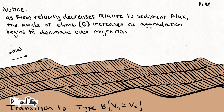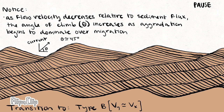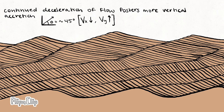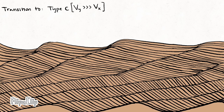If migration remains constant and aggregation decreases, or if aggregation remains constant and migration increases, theta decreases, producing type A ripples. Here we see aggregation begin to dominate, where continued deceleration of the flow fosters increased vertical accretion.